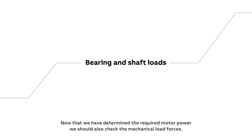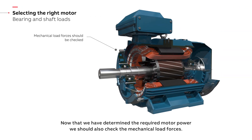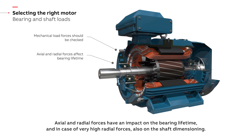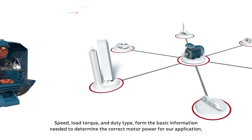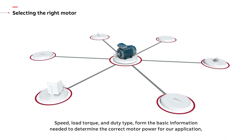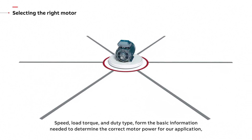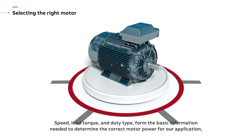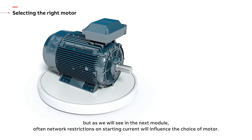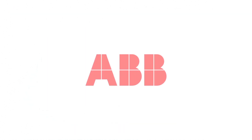Now that we have determined the required motor power, we should also check the mechanical load forces. Axial and radial forces have an impact on the bearing lifetime, and in case of very high radial forces, also on the shaft dimensioning. Speed, load torque and duty type form the basic information needed to determine the correct motor power for our application. But as we will see in the next module, often network restrictions on starting current will influence the choice of motor.